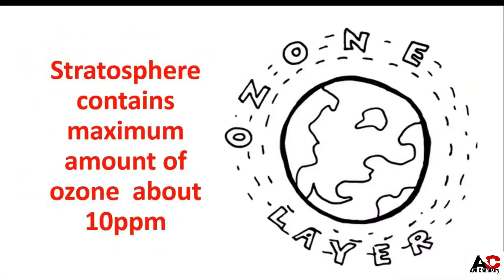The stratosphere contains the maximum amount of ozone, about 10 ppm. Ppm is a unit for quantity used for smaller amounts. Compared to other atmospheric gases, the amount of ozone is very small, so we use ppm — parts per million — meaning how much ozone is present in 1 million parts.